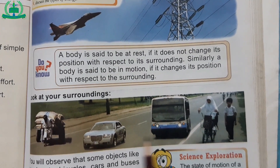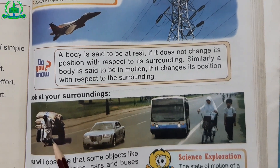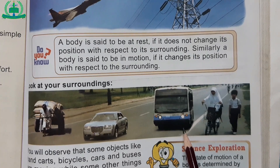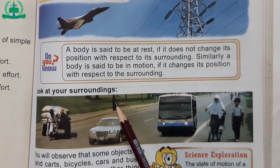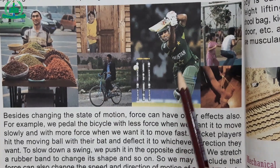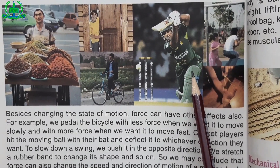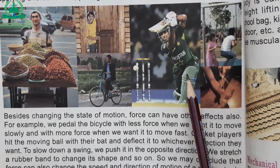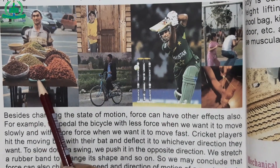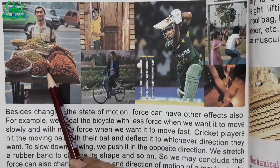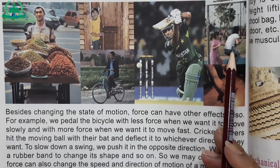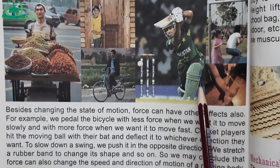Look at your surroundings. You will observe that some objects like hand carts, cars, buses, and bicycles are moving, while some other objects like trees, sign boards and doors are stationary. A force is defined as a push and pull which changes or tries to change the state of motion of a body when acting on it. Some common examples of force are pushing a cart to move it, opening a door, and a boy kicking a ball.